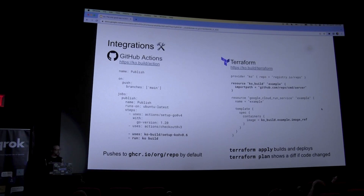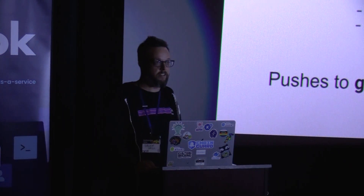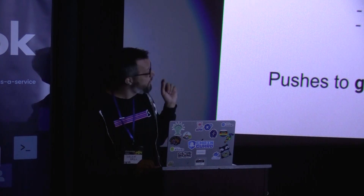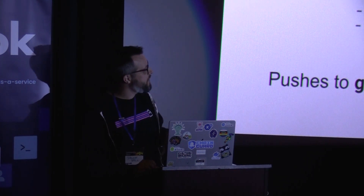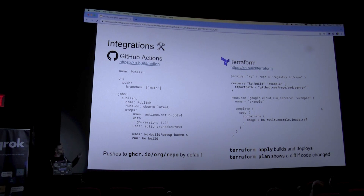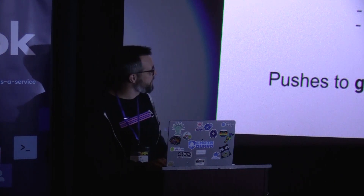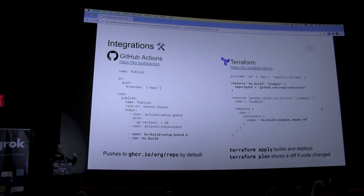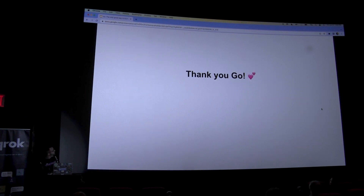There are a couple more integrations. One is GitHub Actions — this is not trimmed, this is the literal full GitHub Actions workflow to build and push a Ko-built image. By default it just says 'I'm running in GitHub, I will authenticate to GitHub and push to GHCR.' We also have a somewhat alpha Terraform provider. If you use Terraform, we have a ko_build resource that will take an import path, build it if it needs to, and give you as an output where it was built and pushed to. When you run terraform apply it will build and deploy, and when you run terraform plan it will tell you if there's a diff only if your code changed — so you don't need to redeploy a service if the code behind it did not change.